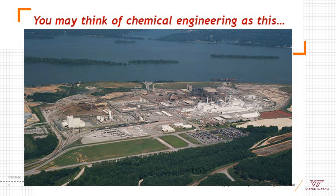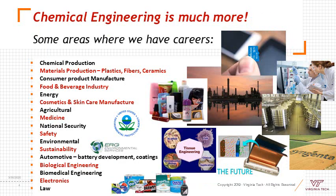However, the roles of chemical engineering have evolved over time to encompass much more than this. Chemical engineering is much more than just chemical production. Some areas where chemical engineers have careers include materials production including plastics, fibers, and ceramics; consumer product manufacture; food and beverage industry; energy production; cosmetic and skin care manufacture; agricultural; medicine; national security; safety; environmental and sustainability; automotive development including battery development and coatings; biological and biomedical engineering; electronics; and even law, patent law.